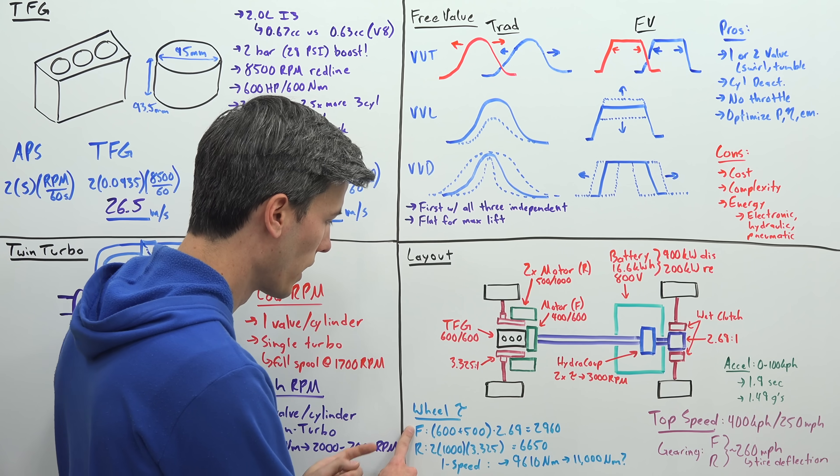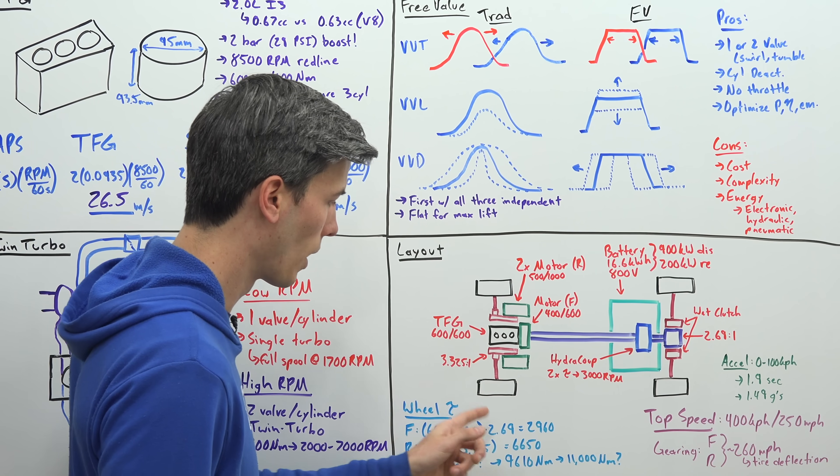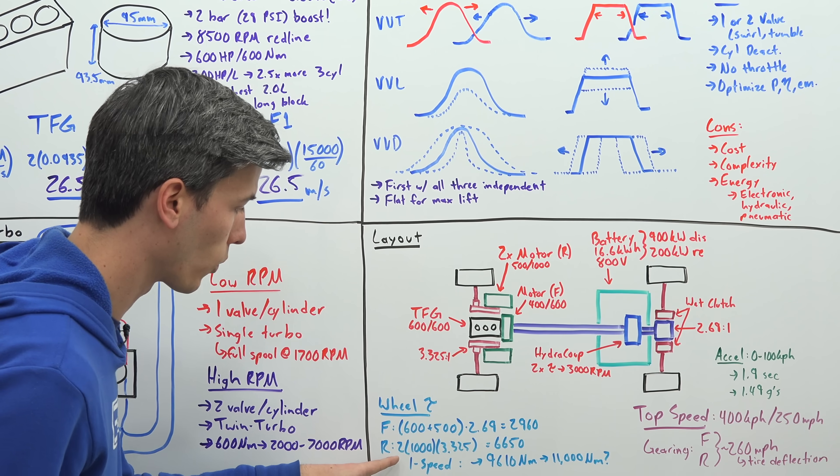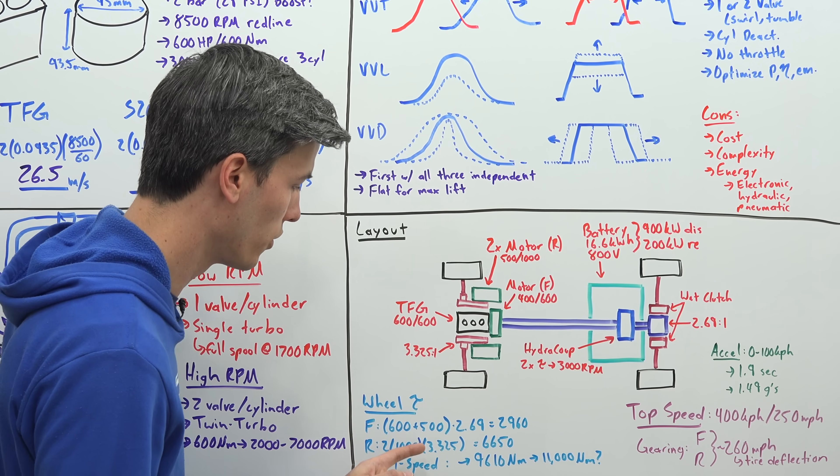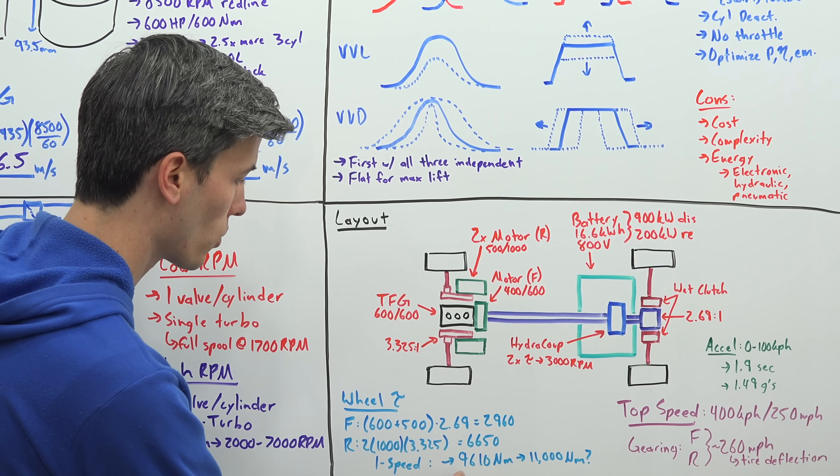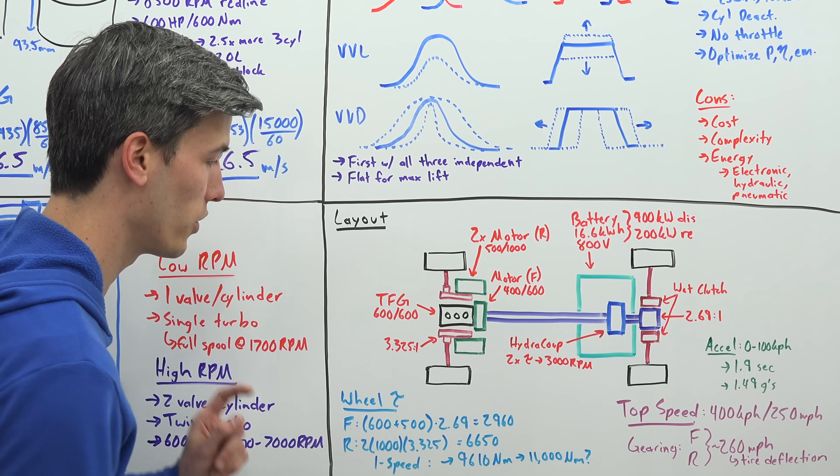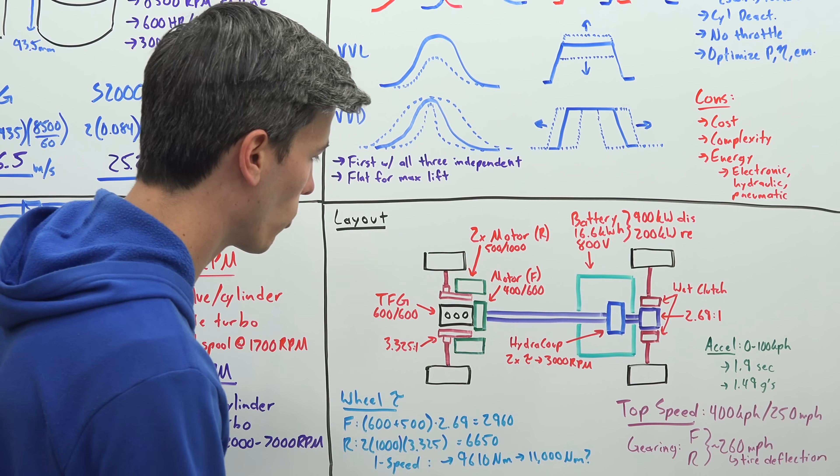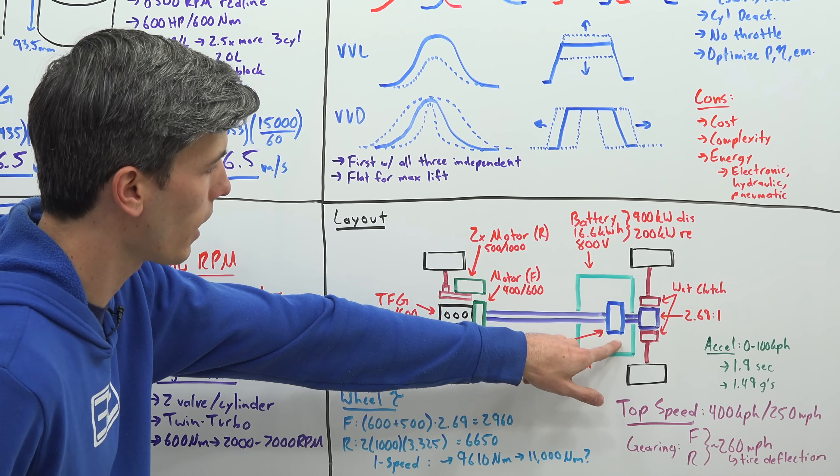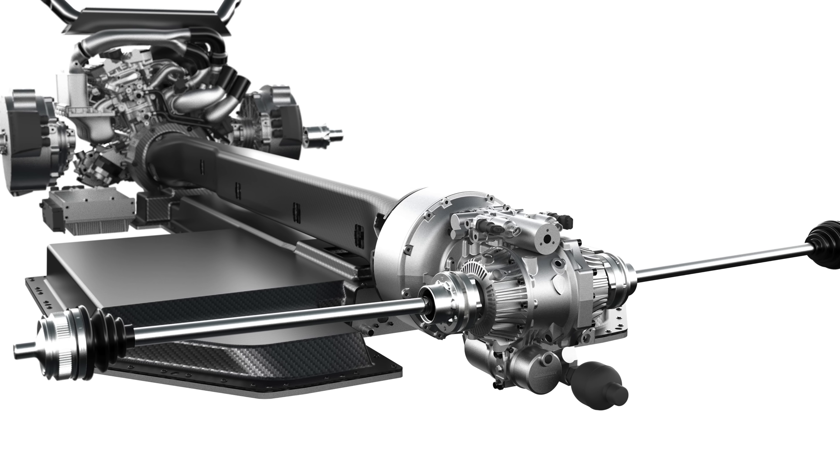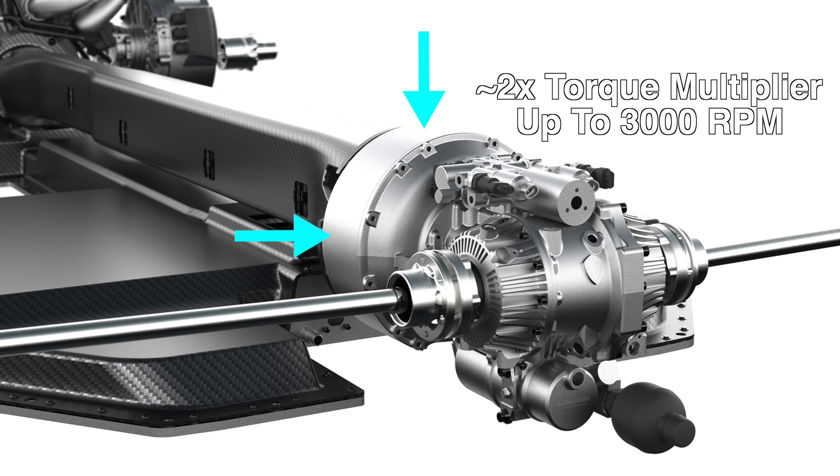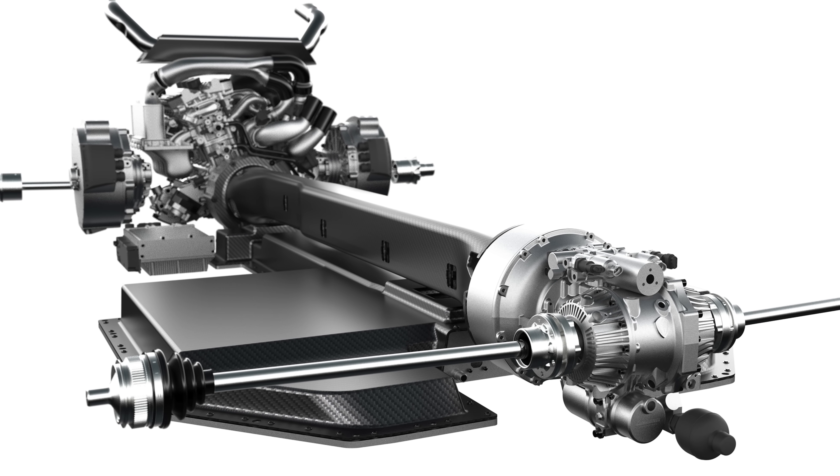And so if we add up our wheel torque, in the front we have 600 Nm plus 500 Nm, multiply that by 2.69, we get 2960 Nm. In the rear, we have two electric motors, each with 1000 Nm of torque, multiply that by 3.325, and we get 6650. So we combined have 9610 Nm. Now Koenigsegg says the actual wheel torque peaks at 11,000 Nm. So where does that come from? Well, through this hydraulic coupling. So Koenigsegg says with this hydraulic coupling, you can have up to two times torque multiplication, up to 3000 rpm. And then it'll lock up and be more efficient once you reach higher speeds. So that's how they're able to increase their peak wheel torque up to 11,000 Nm.